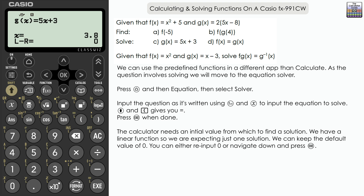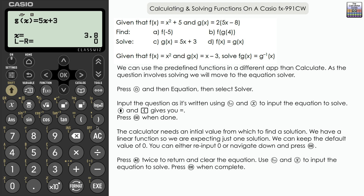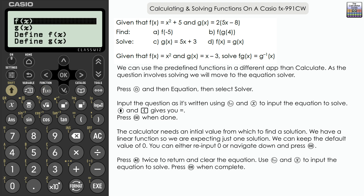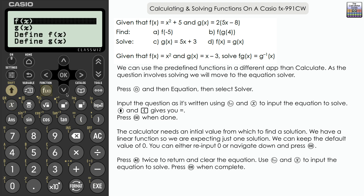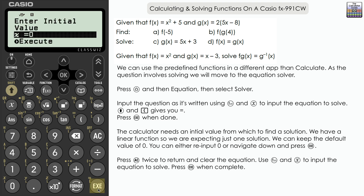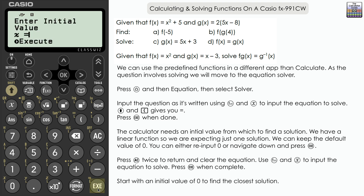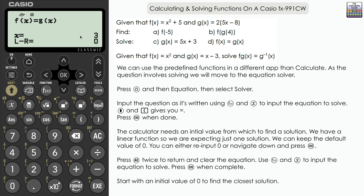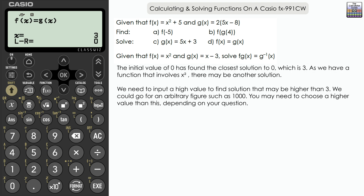For Part D, f(x) equals g(x) — what value or values of x make that true? Press AC to return from the solution screen, then AC again to clear the equation from Part C. Set up the new equation: use Function to input f(x), then Equals using Shift and left bracket, then Function again to input g(x). Keep the initial value at zero to find the first solution. The result is x equals 3.